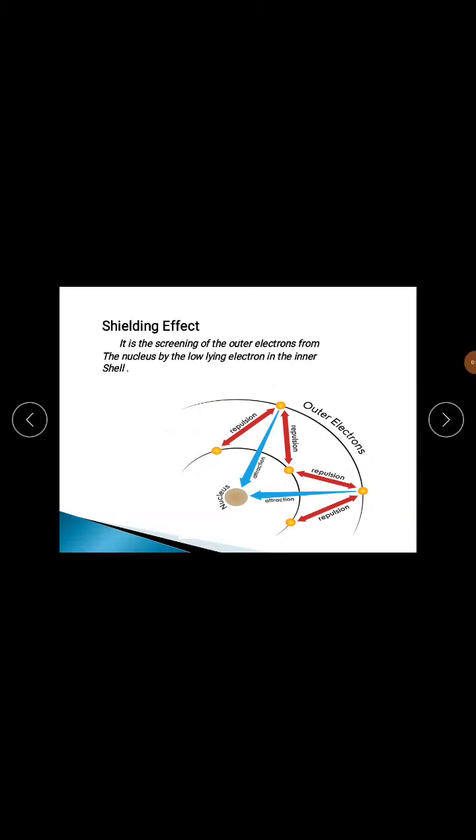Neutrons are also present in the nucleus. Protons carry a positive charge. The nucleus overall is positively charged. The number of protons equals the number of electrons. For example, if the proton number is 2, then the electron number will be 2. If the proton number is 8, then the electron number will be 8.